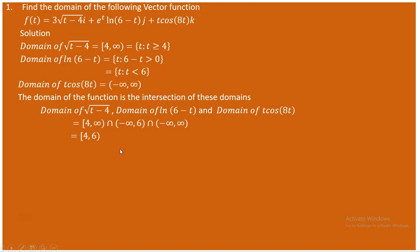Taking the intersection: the first domain is [4, ∞), the second is (-∞, 6), and the third is (-∞, ∞). The intersection is [4, 6) — inclusive of 4 but exclusive of 6. Therefore the domain of the vector function f(t) is {t : 4 ≤ t < 6}.